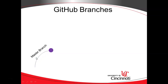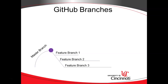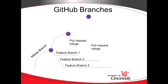In a previous video, we took an overview look at GitHub branches, and we considered how we can use feature branches so that we can take a snapshot of the master branch at a point in time, and then use that as a sandbox to develop a feature, and then pull the features back into the master branch via a merge and a pull request when those features are ready.